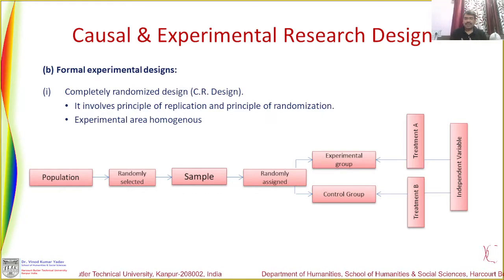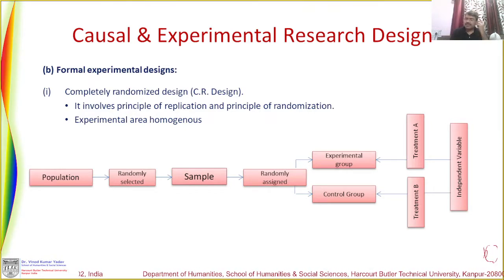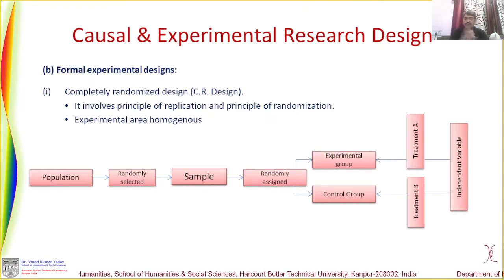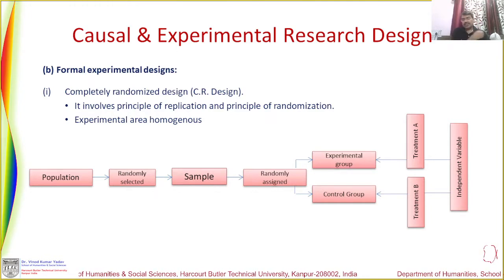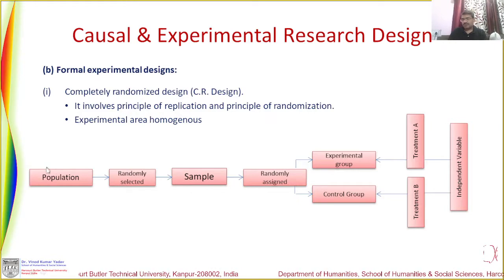We try to randomize the experiment as well as replicate it — meaning you conduct it more than once, two or three times, so that you can get replicated data for duplication of the experiment. This helps you reach closer to the hypothesis or outcome. Completely randomized design mainly focuses on randomization of the sample as well as the group.